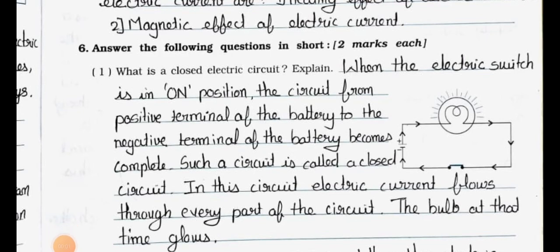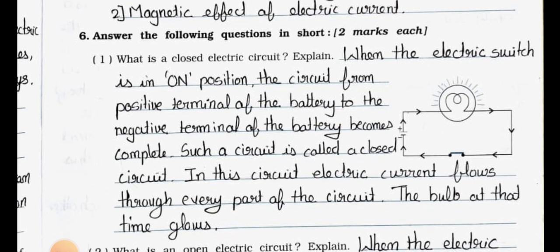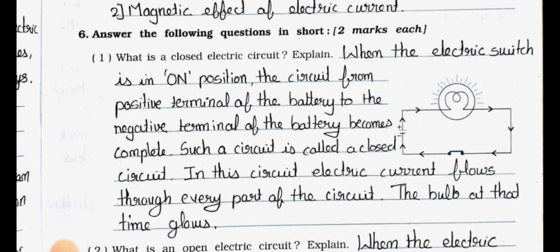Hello students, I hope you all are fine. Today we'll see standard seventh, subject science, chapter number 14: Electric Current and its Effects. In the previous video we covered up to main five part one. Today we'll see part two, starting from main six: Answer the Following Questions in Short, two marks each.